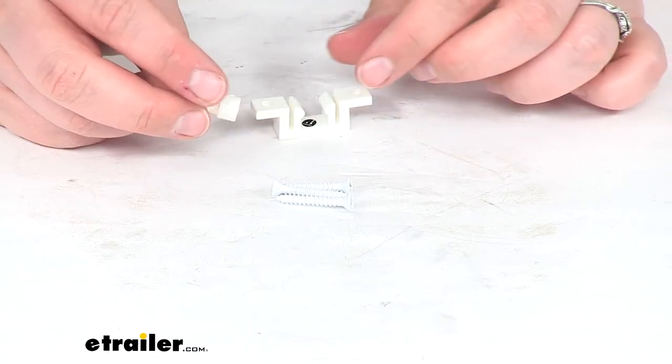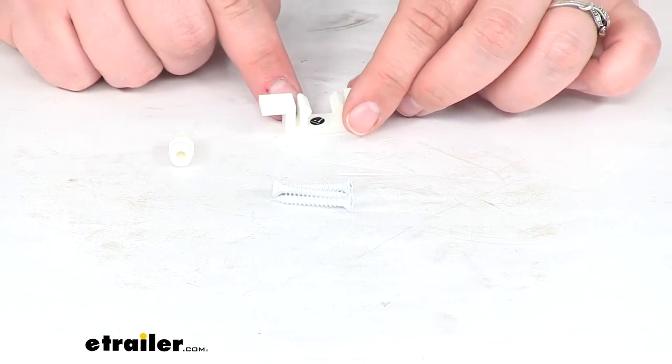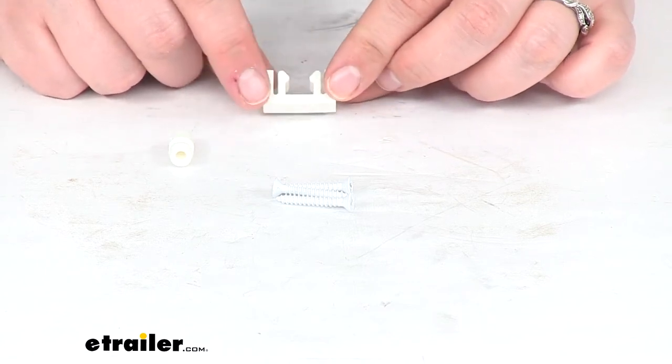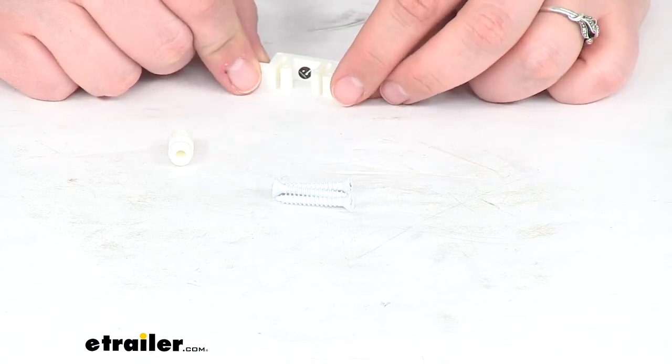It comes with the mounting hardware necessary to get this in place. This latch portion does require a half inch deep cutout in that door jamb so that this can sit flush with the door.